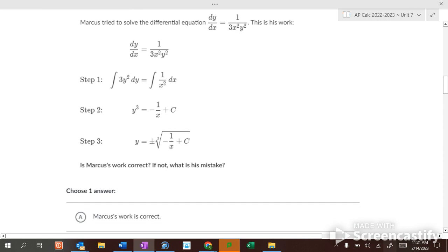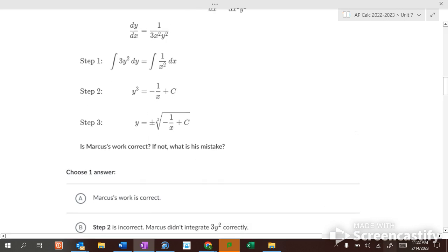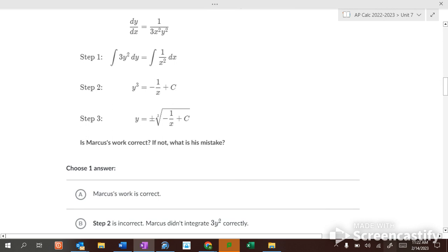Marcus tried to solve this differential equation dy over dx equals 1 over 3x squared y squared. Did he make any mistakes in his work? Step one, he multiplied by 3y squared on each side and multiplied by dx on each side. Then he integrated both sides, so y cubed equals, and then this is x to the negative 2nd dx. So you add 1 to the power, so it becomes x to the negative 1st with a negative 1 in front. So that looks right.